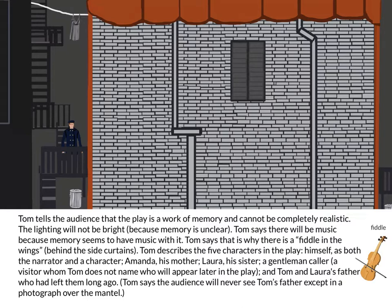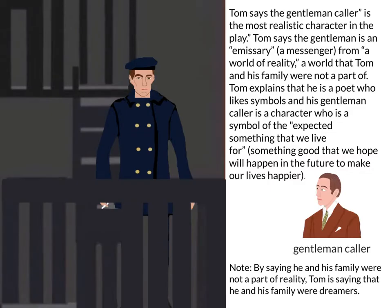Tom describes the five characters in the play: himself as both narrator and character, Amanda his mother, Laura his sister, a gentleman caller whom Tom does not name who will appear later, and Tom and Laura's father who had left them long ago. Tom says the audience will never see the father except in a photograph over the mantle. Tom says the gentleman caller is the most realistic character — an emissary, a messenger from a world of reality that Tom and his family were not a part of. The gentleman caller is a symbol of the expected something that we live for.